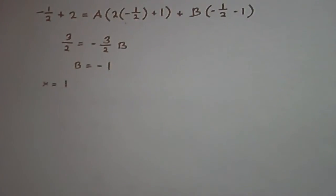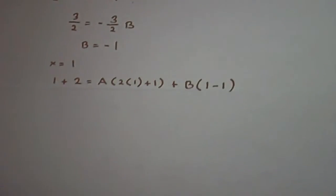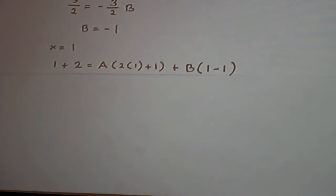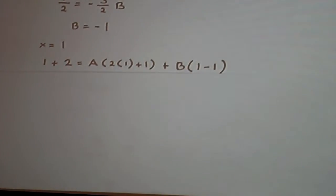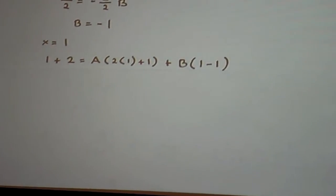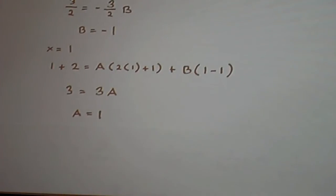Now to solve for A we set x equal to 1 and we plug it in which will give us 1 plus 2 equal to A times 2 times 1 plus 1 plus B times 1 minus 1. Which will give us 3 equal to 3 times A and A will be equal to 1.